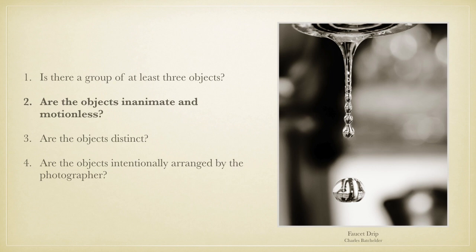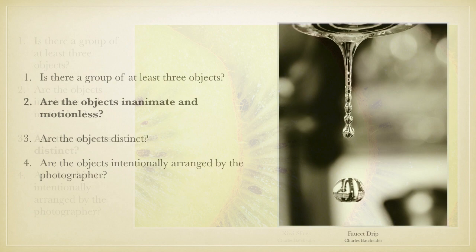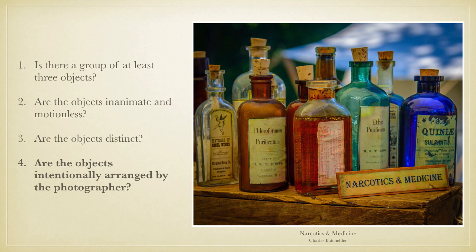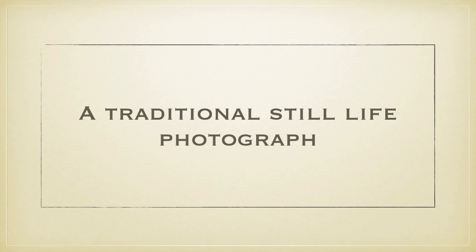When we pose our questions regarding this next photograph, we see it is clearly a photograph of water in motion. It fails the second question and is not a traditional still life. The kiwi slices are not distinct — they are not essentially different from each other — so that photograph fails the third question. And the objects in the final photo were not arranged by the photographer; they were a display at a Civil War reenactment. That photograph fails the fourth question.